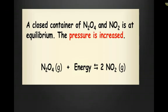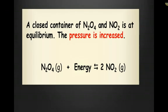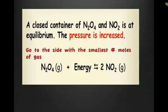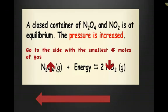Let's look at this example. What happens to this system if the pressure is increased? An increase in pressure favors the smallest number of moles of gas. How many moles of gas are on the left side of the equilibrium? One. And how many moles are on the right side? Two. You're going to go to the side with the smallest number of moles of gas — the reverse reaction is favored. Since the reverse reaction is favored, reactants are going to increase and products are going to decrease.